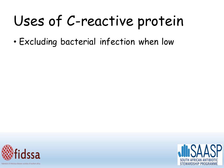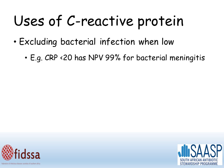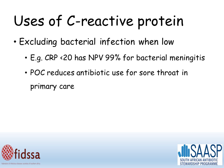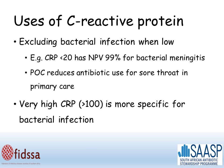Here are some uses for C-reactive protein. It's good at excluding bacterial infection when it's low. For example, a CRP less than 20 has a negative predictive value of 99% for bacterial meningitis. And when used as a point-of-care test, it reduces antibiotic use for sore throat in primary care settings. A very high CRP greater than 100 is more specific for bacterial infection, although this can occur with other conditions.